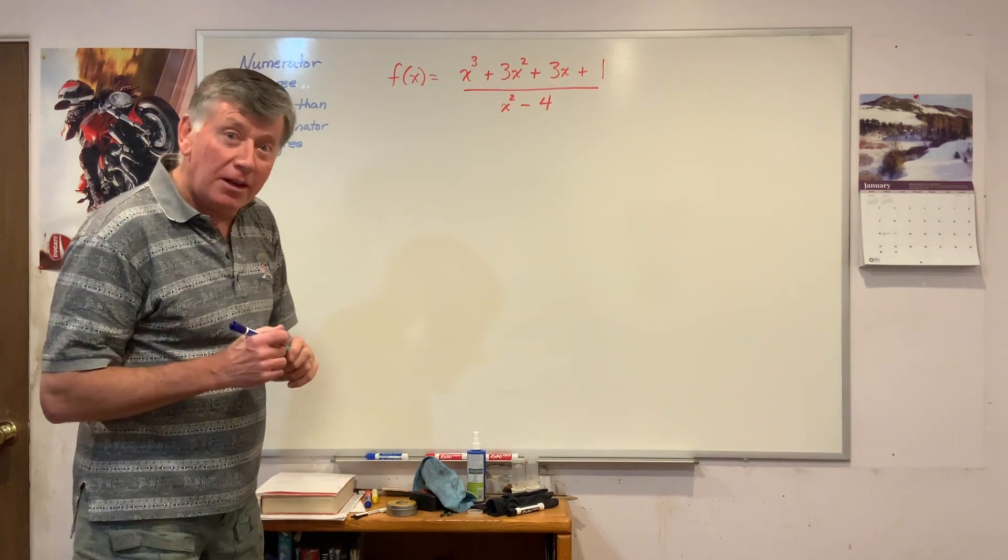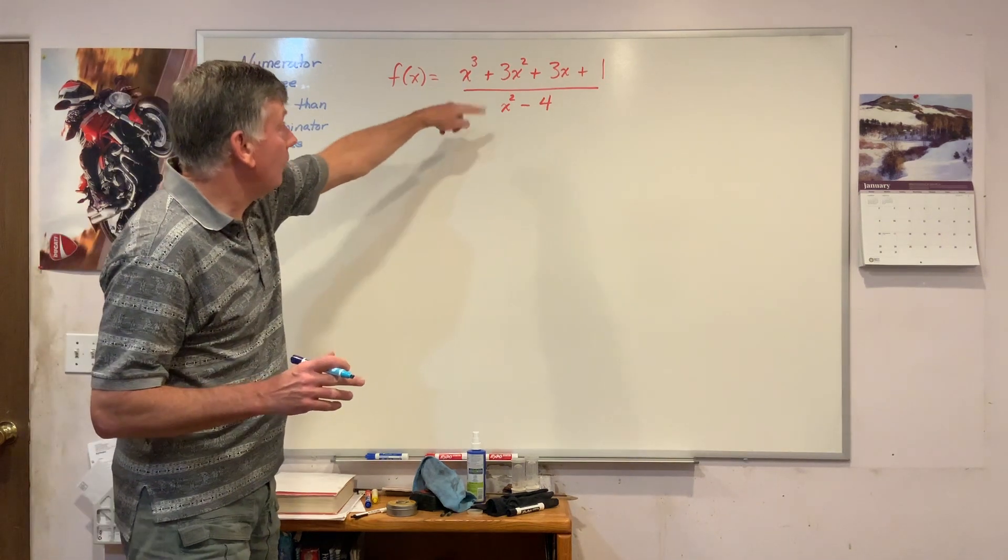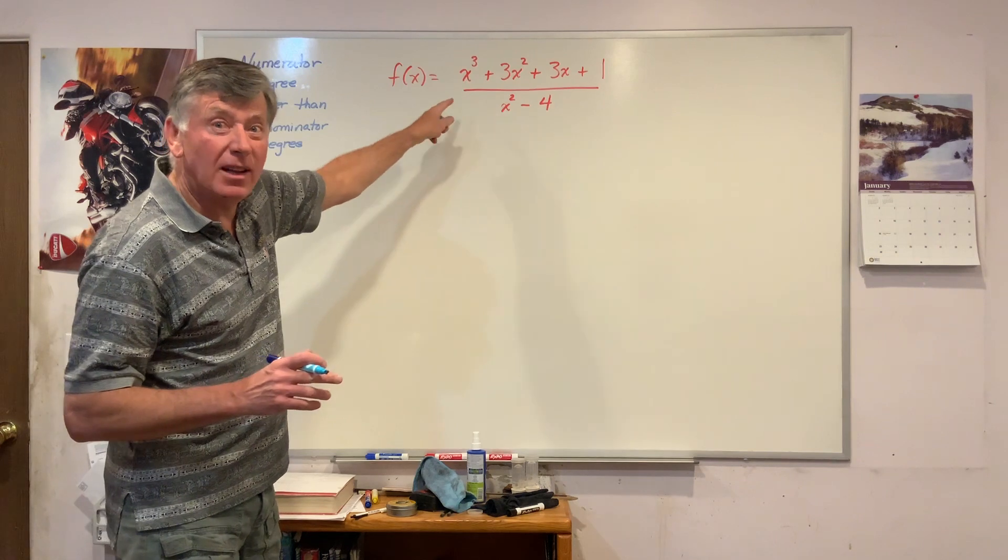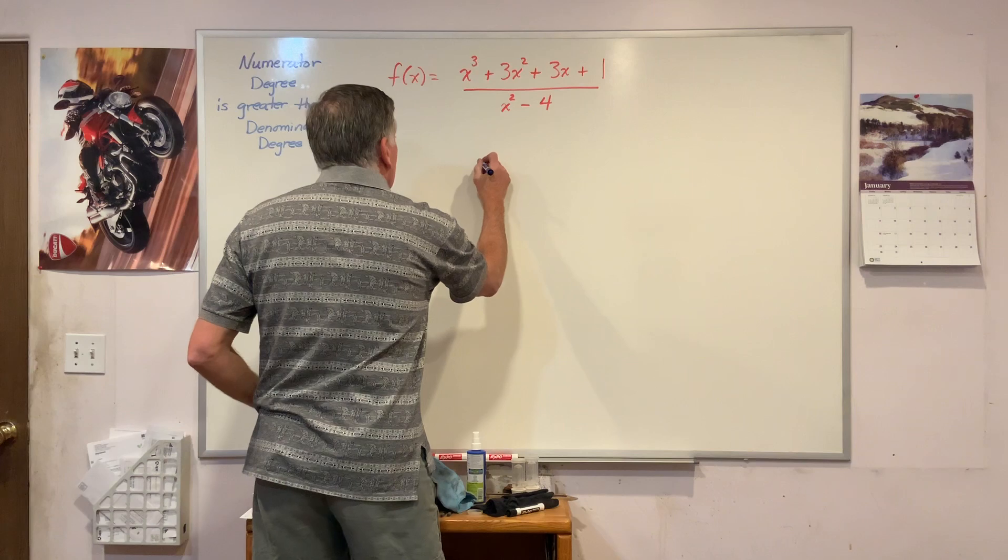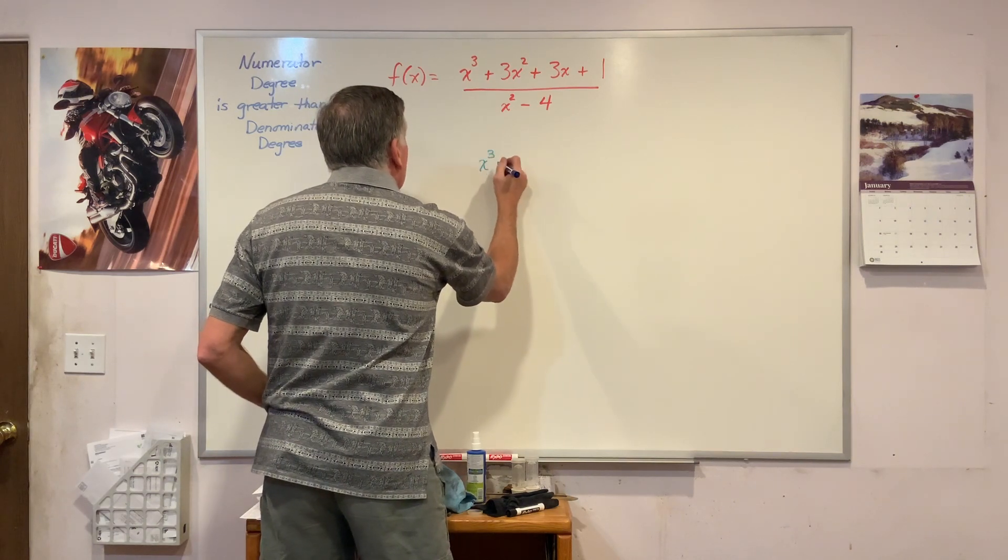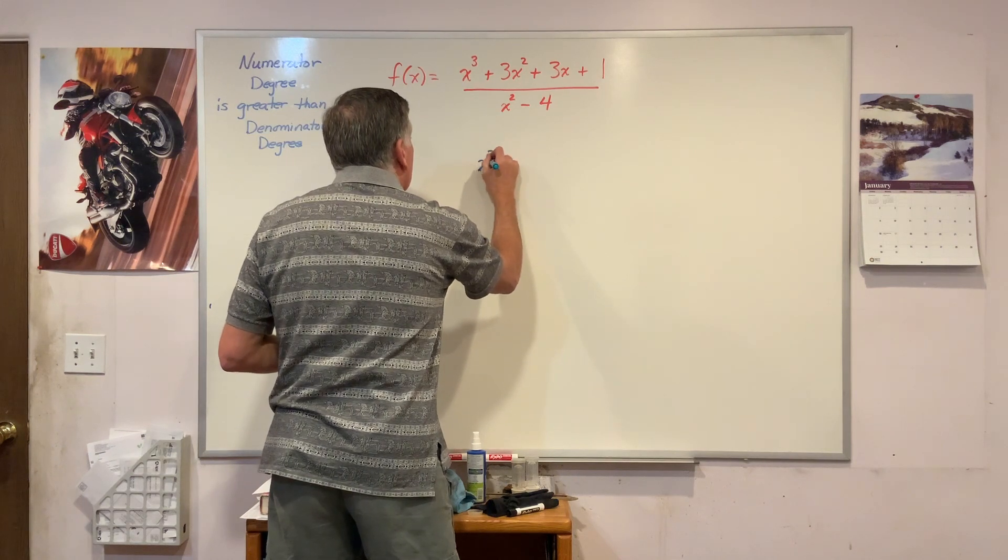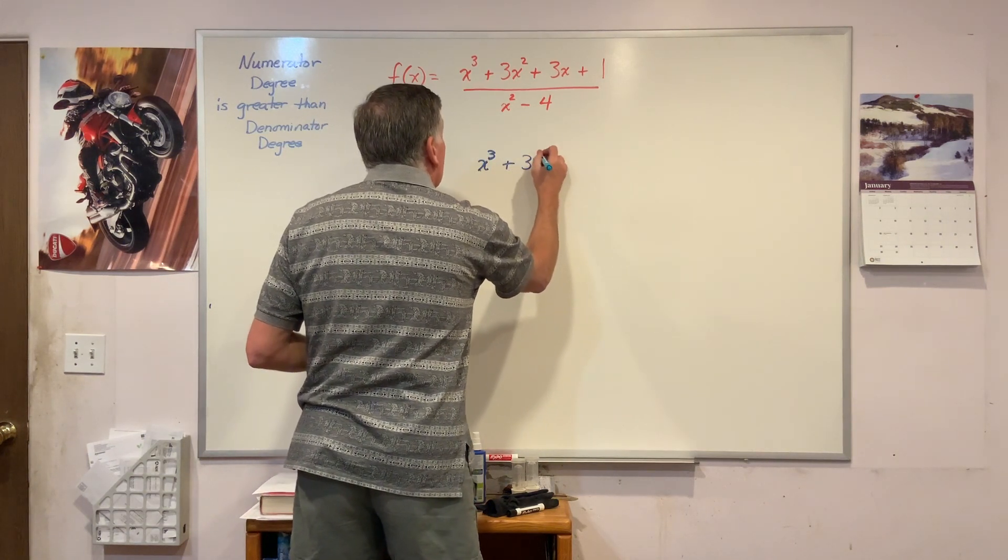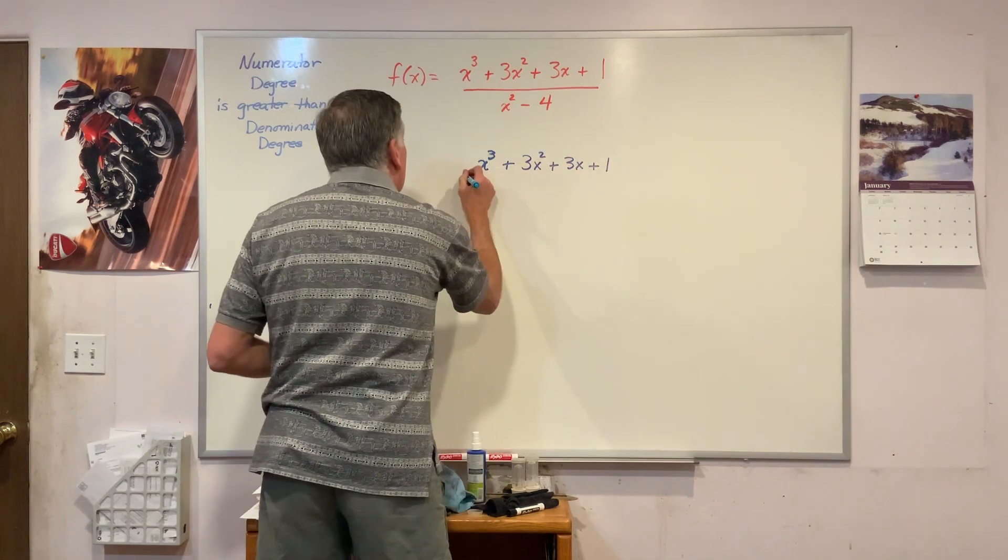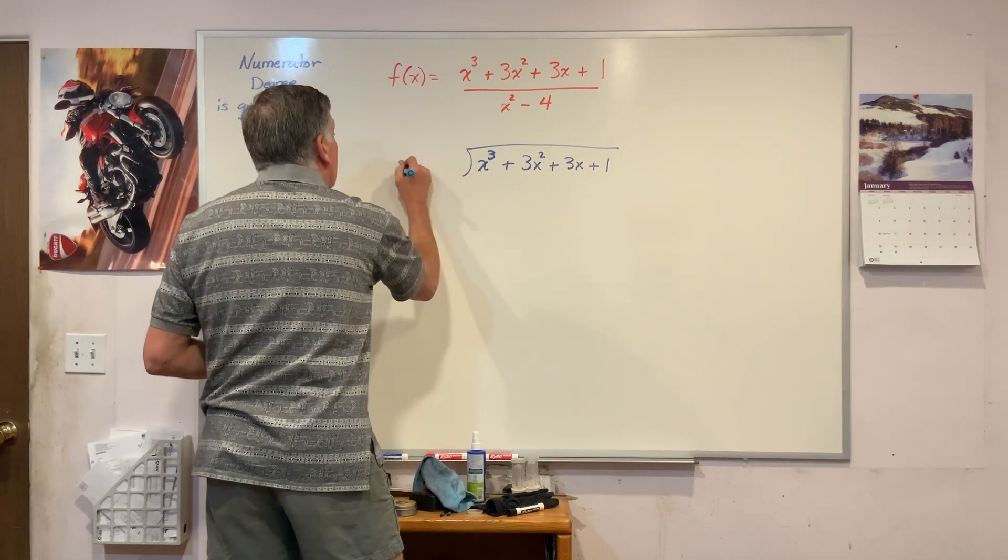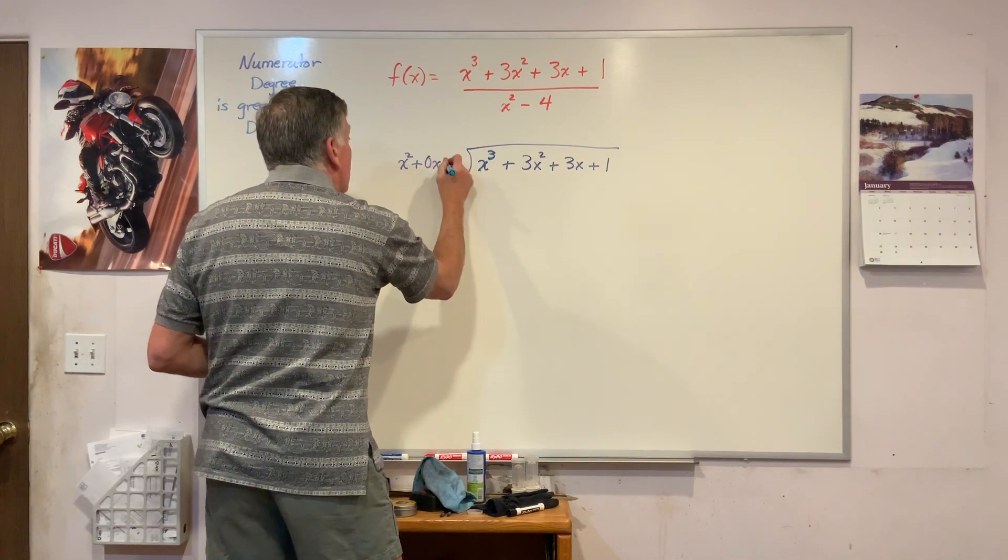This time I must perform my polynomial division because I really cannot tell from this. Well, I think I can, but let's make sure. Polynomial division: x cubed plus 3x squared plus 3x plus 1 divided by x squared plus 0x - I need that placeholder - minus 4.